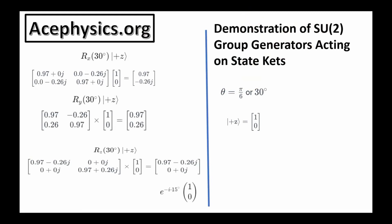This slide demonstrates how the group generators act on a state ket, specifically the state |+z⟩. Rx(30°) is one of the generators of SU2 with theta equal to 30, acting on complex space C2. When this matrix acts on |+z⟩, it transfers some of the real component of complex number 1 into the imaginary part. For Rz acting on |+z⟩, it takes some of the real part of complex number 1 and transfers it into the imaginary part, which corresponds to adding an overall phase.